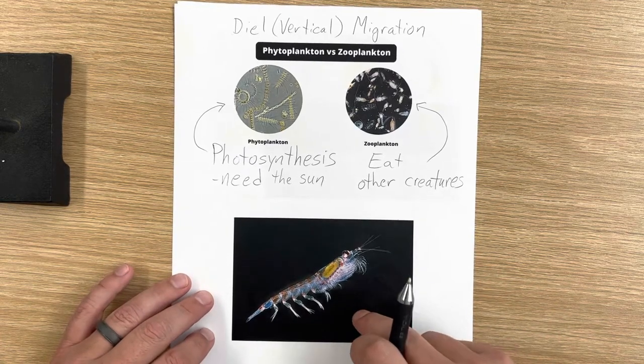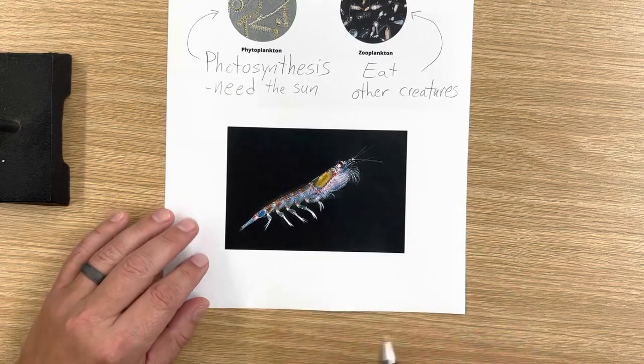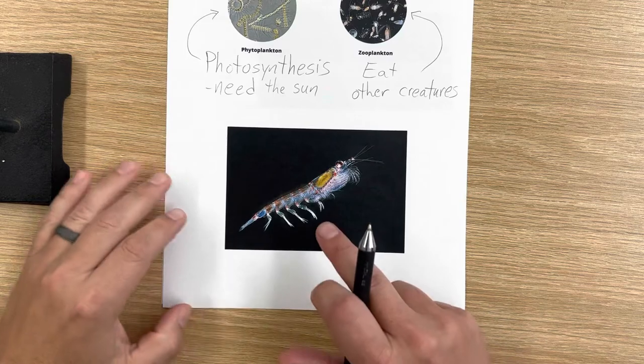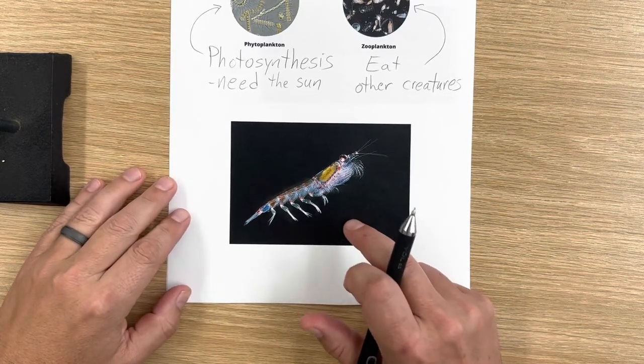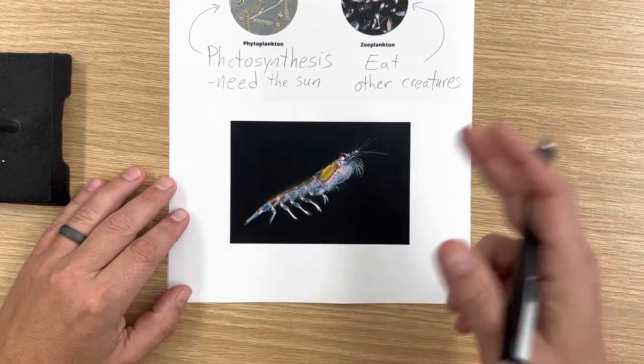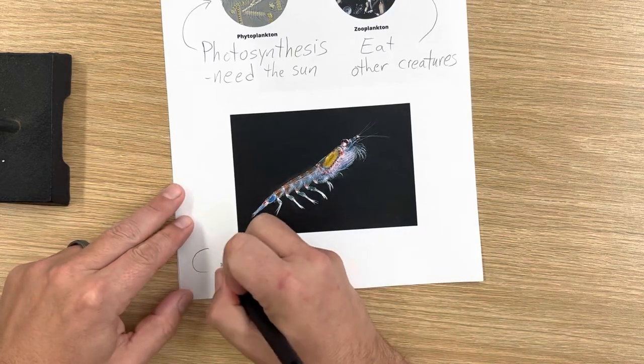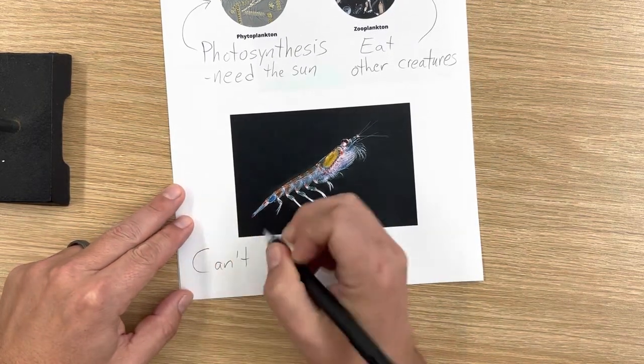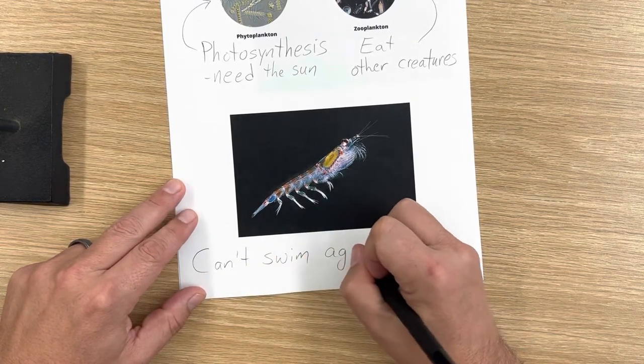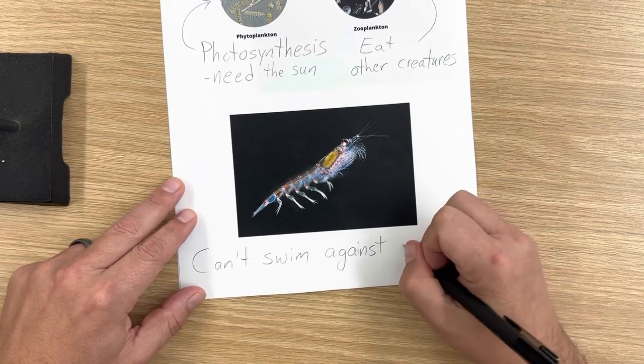When we're talking about these plankton, and especially the zooplankton, which we have down here, this is a zooplankton, microscopic, but it looks like a shrimp. It's important to remember that they cannot swim against a current. They're so small that even though they can swim through the water, they can never swim fast enough against the current.